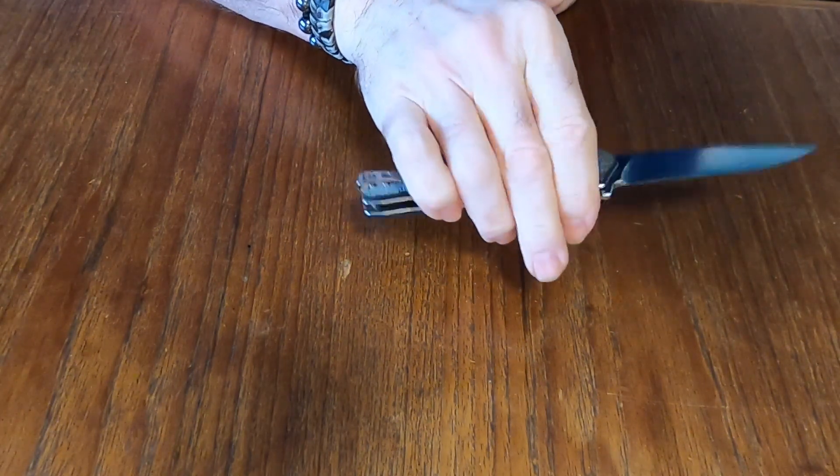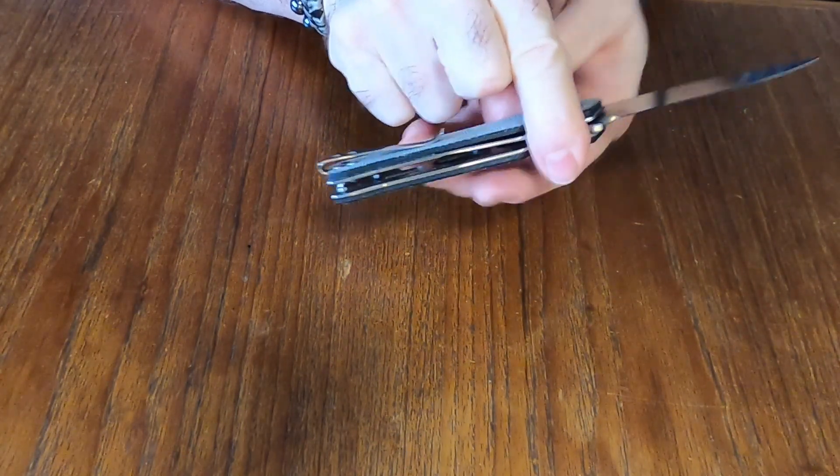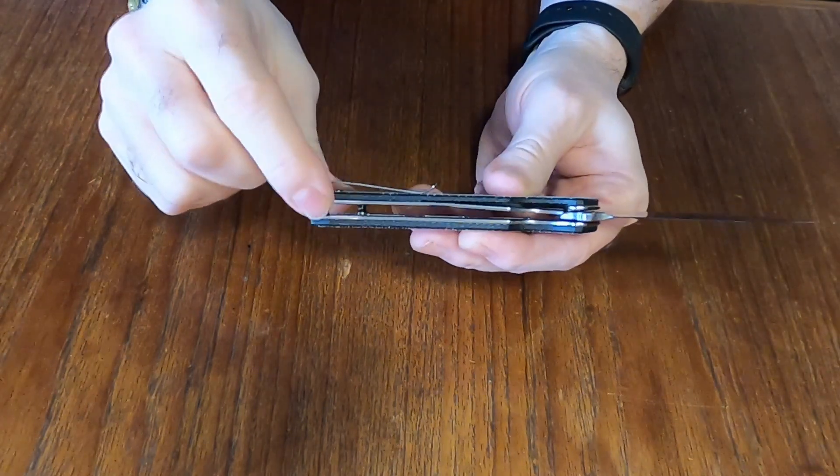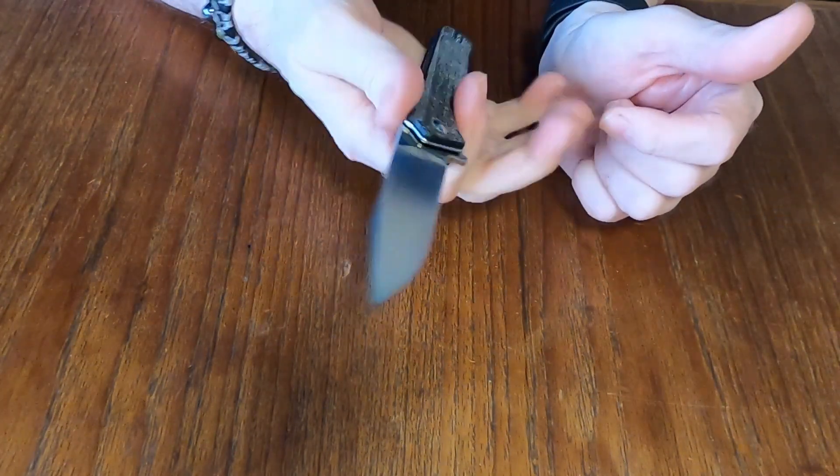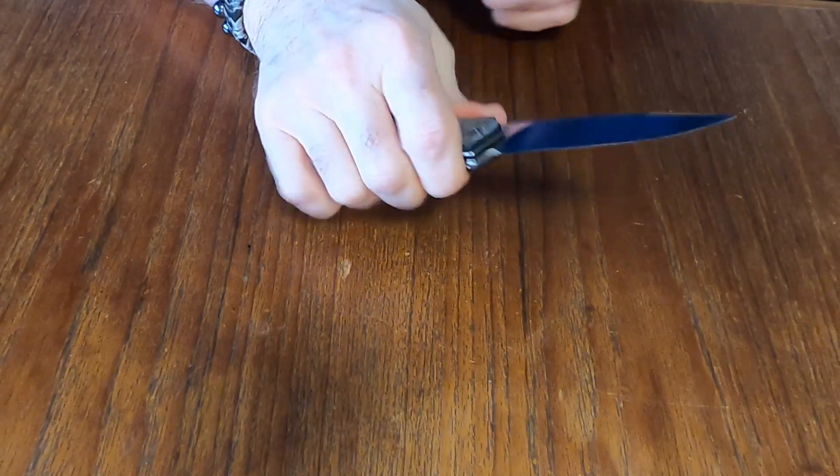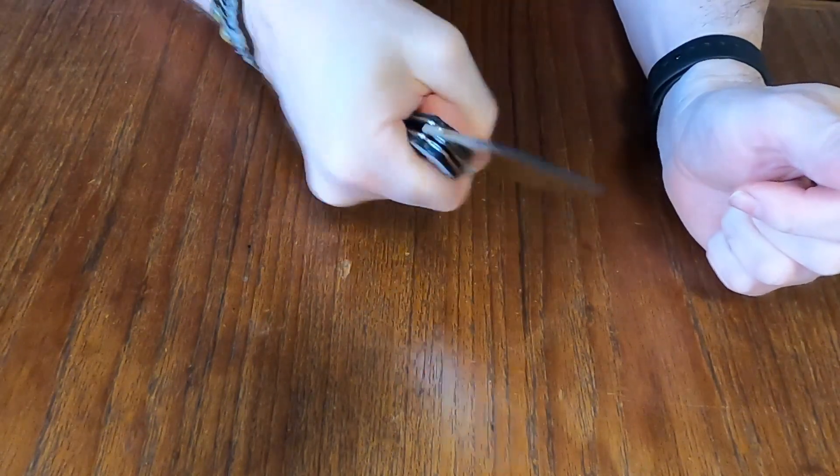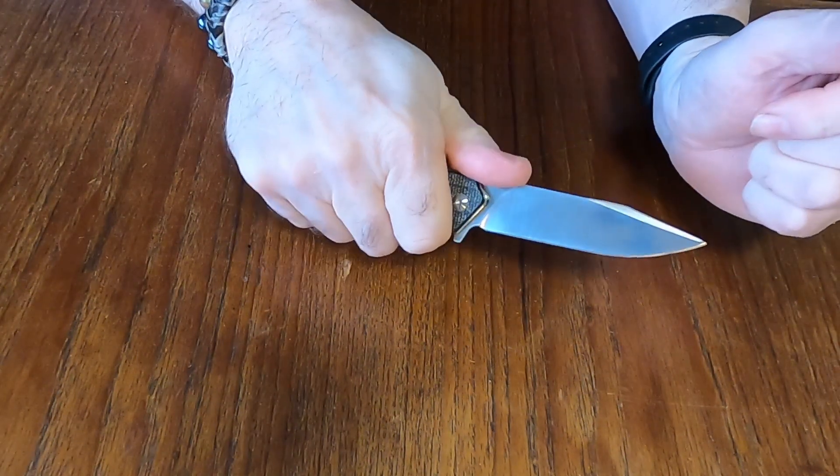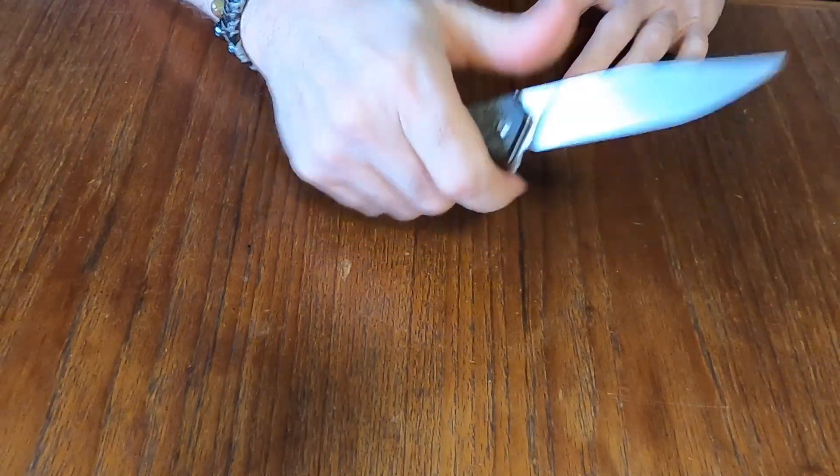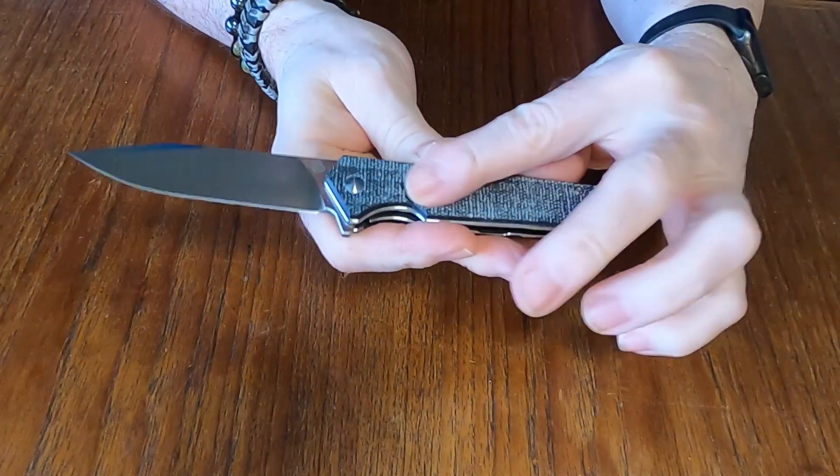Now mind you, you are on the butt of the knife but whatever, you got four fingers on there so that's good. It's a good size, fits the hand well. The micarta gives you a good grip.